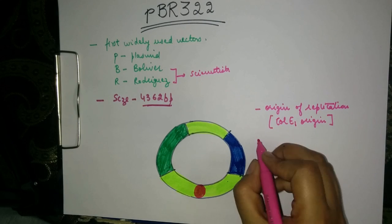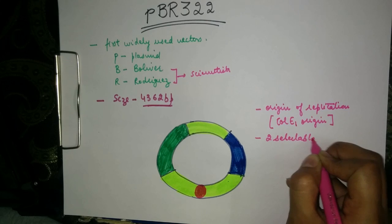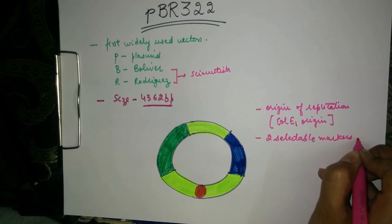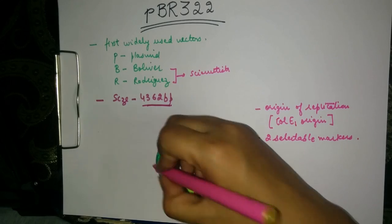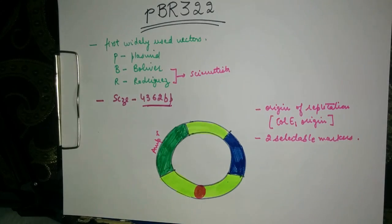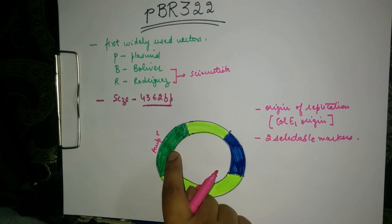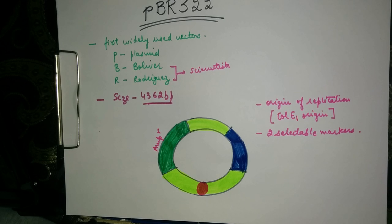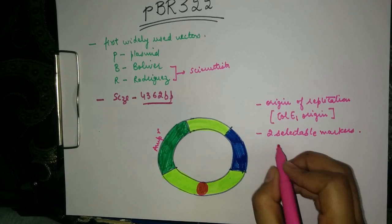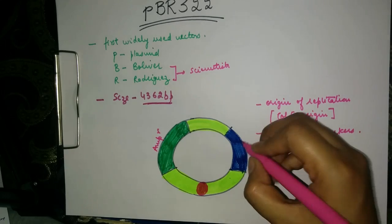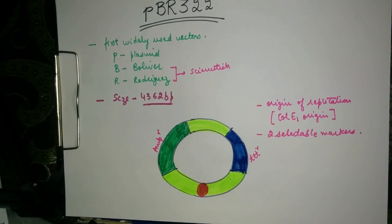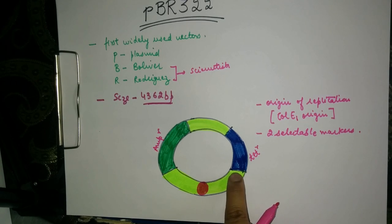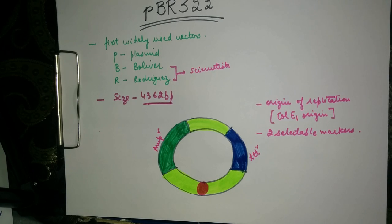The second feature is that it has two selectable markers. One is an ampicillin resistant gene, also called the BLA gene. This gene codes for beta-lactamase, which confers resistance to the antibiotic ampicillin, meaning the plasmid will be resistant when grown on ampicillin medium. The second selectable marker is the tetracycline resistant gene, which codes for a tetracycline resistant protein conferring resistance when grown on tetracycline medium.